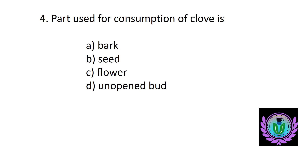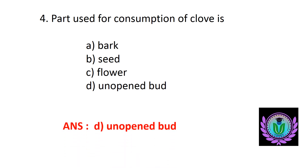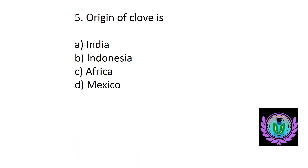Part used for consumption of clove — option A: bark, B: seed, C: flower, D: unopened flower bud. The answer is option D, unopened bud. Origin of clove is — option A: India, B: Indonesia, C: Africa, D: Mexico. The answer is option B, Indonesia.